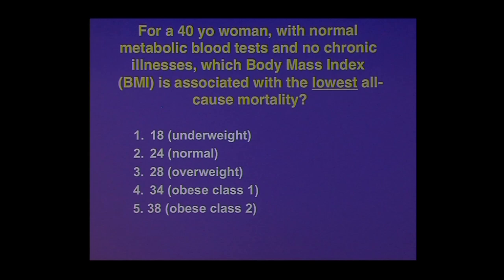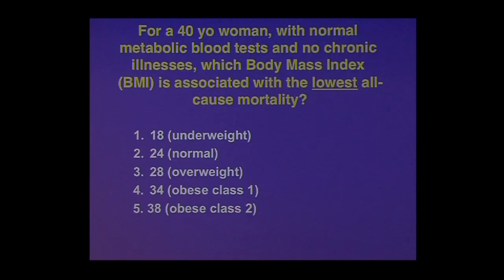Here's a thought exercise: for a 40-year-old woman with normal metabolic blood tests — blood sugar, blood pressure, blood lipids — in good health, which body mass index is associated with the lowest all-cause mortality? In other words, at what weight would we predict she would be likely to live the longest?